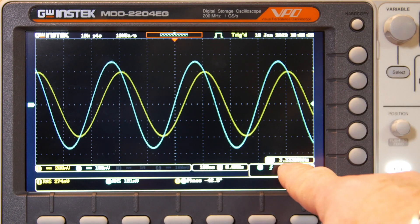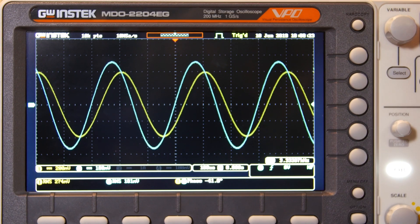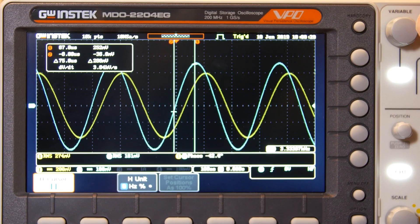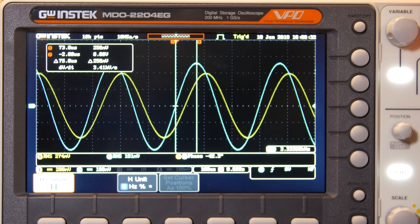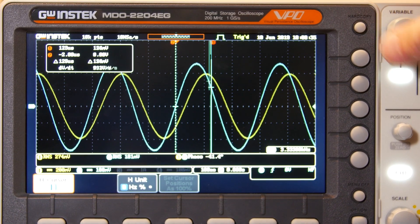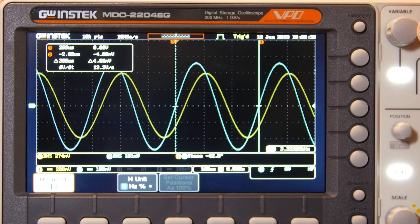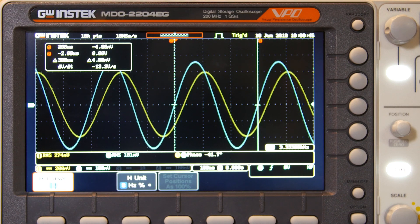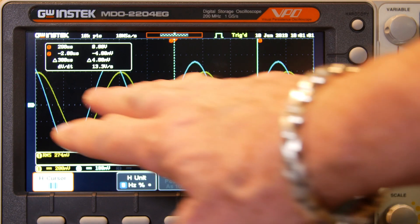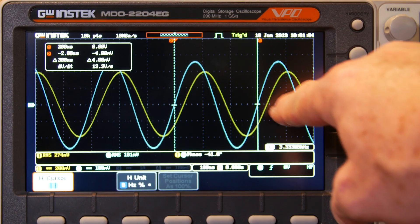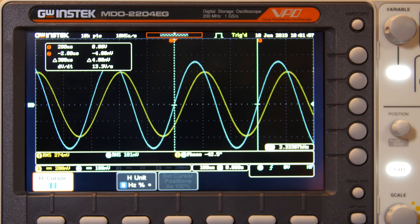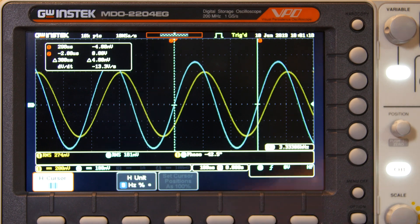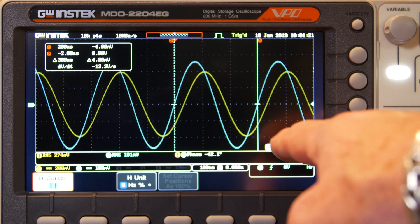So what we want to do is we want to spread the frequency out so it's easier to see. But the first thing we want to know is how much time there is in a cycle at this point. Now, we know it's 333, so we can calculate that. We can also just measure it with the cursors. So if we bring up our cursors, we can bring this one to there. And bring it to full cycle over here. And what we see is we have 300 microseconds in a cycle.